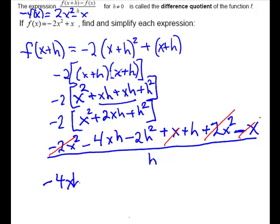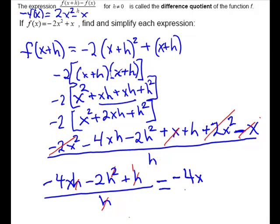Minus 4xh minus 2h squared plus h, it's all over h. And again we have h in every term, so we can divide that out. Here it will take an exponent off, and here it will leave you 1. So we have minus 4x minus 2h plus 1.